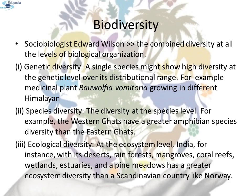India, for instance, with its deserts, rainforests, mangroves, coral reefs, wetlands, estuaries, and alpine meadows, has a greater ecosystem diversity than a Scandinavian country like Norway.